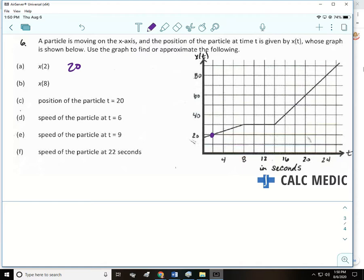So that means that after two seconds, the particle is at the 20th unit on the x-axis. What about b, x of 8? So after 8 seconds, the particle is at the 30th unit on the x-axis. And then c asks us to do the exact same thing in a different way, the position of the particle at time equals 20. 60. So same thing, we just go to 20, find the value of the function.